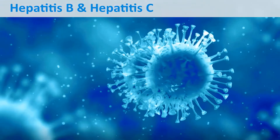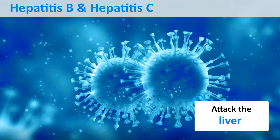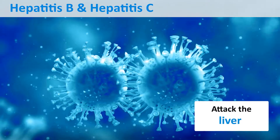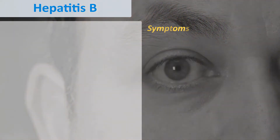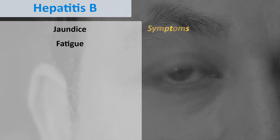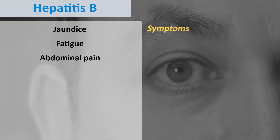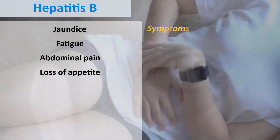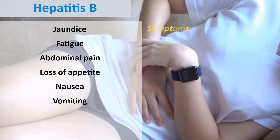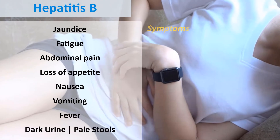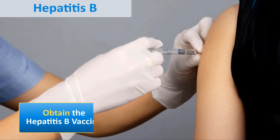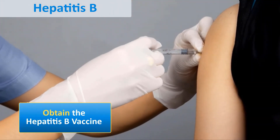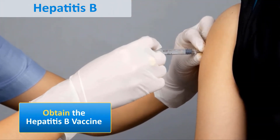Hepatitis B and hepatitis C are diseases that attack the liver. Symptoms of hepatitis B may include jaundice, fatigue, abdominal pain, loss of appetite, nausea, vomiting, fever, dark urine, and pale stools. Currently there is no cure, but it can be prevented by the hepatitis B vaccine.